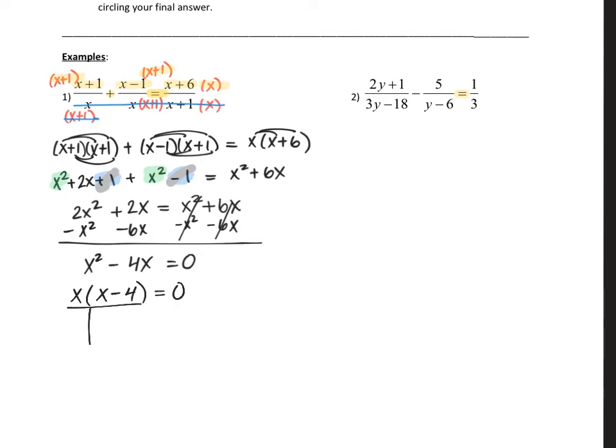So we're going to take out a GCF of x and we're left with (x - 4). And T-chart, we have x = 0 and x - 4 = 0. Simply add four and we get x = 4. So here's one answer and here's another answer.